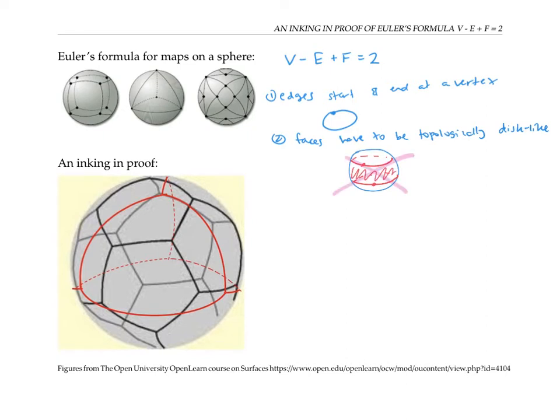In this video, I want to explain how we can be sure that this formula holds for any map on the sphere. Specifically, what I'm going to prove is that for any two maps on the sphere, V minus E plus F has the same value. From that, it's easy to conclude that its value is 2, just by counting up V minus E plus F for one particular map.